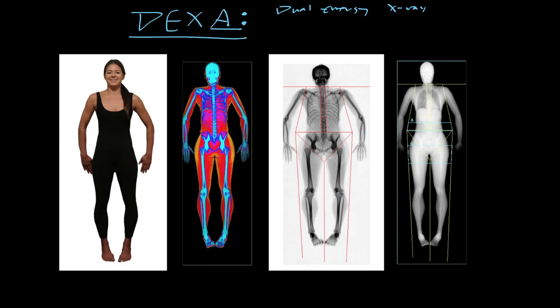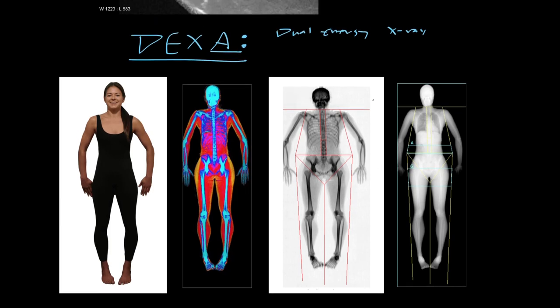So the idea is, you shoot a little tiny amount of x-rays through the body, and by adding up how much of it gets absorbed in different areas of the body, you can get an idea of how much fat, how much muscle, and how much bone is in each of those areas.